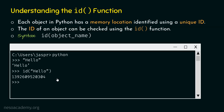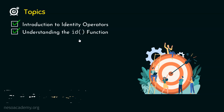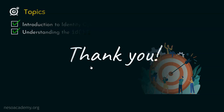As we have understood the id function, we are done with this lecture. We have understood what an identity operator is and what the different types of identity operators in Python are. We have also understood how the id function works and its syntax — we just need to provide the name of the object to the id function in order to know its id. I will see you in the next one.